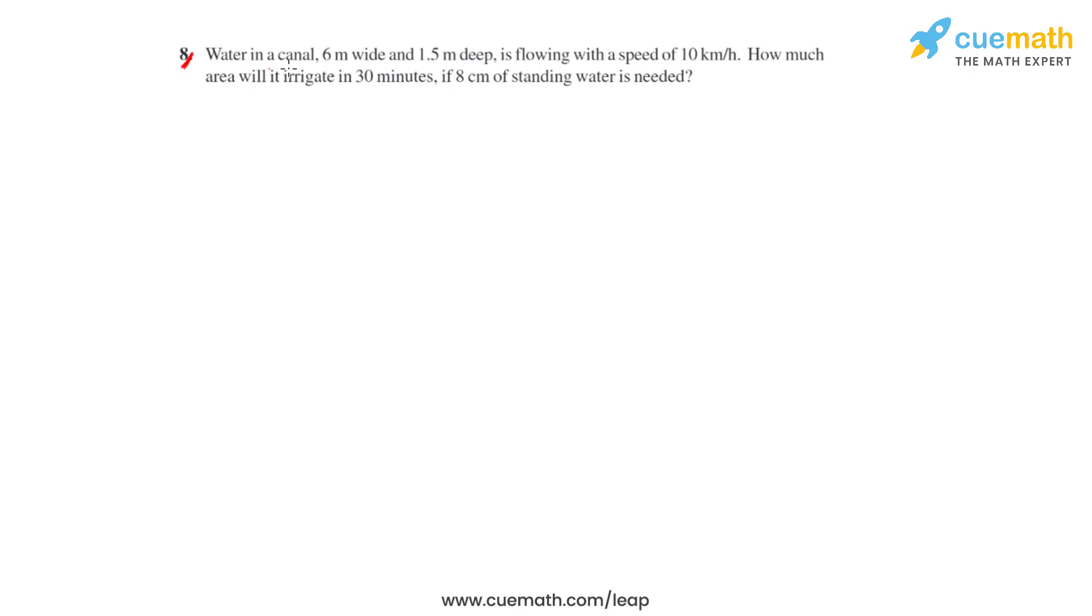Question number 8 of this exercise says that water in a canal which is 6 meters wide and 1.5 meters deep is flowing with the speed of 10 kilometers per hour. How much area will it irrigate in 30 minutes if 8 centimeters of standing water is needed?